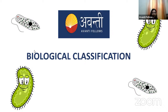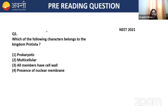Good afternoon everyone. Today we are going to discuss biological classification. Let's take a pre-reading question. The question says: which of the following characters belong to the kingdom Protista? Option 1 is prokaryotic. Option 2 is multicellular. Option 3 is all members have cell wall. Option 4 is presence of nuclear membrane.